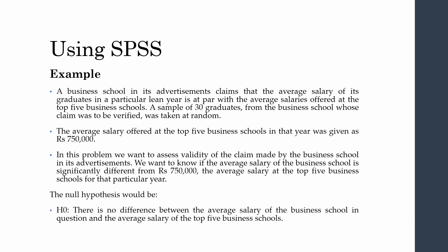The null hypothesis is that there is no significant difference between the average salary of the business school in question and the average salary of the top 5 business schools. If the null hypothesis holds, the school's claim is correct — their students are earning 750,000 per year, the same as top-5 graduates.